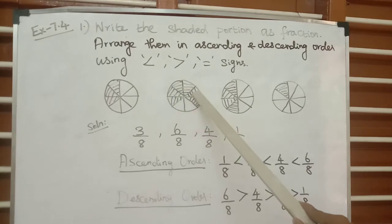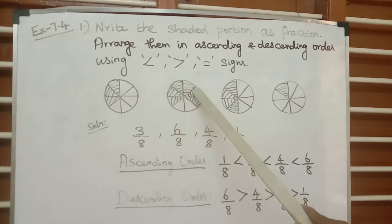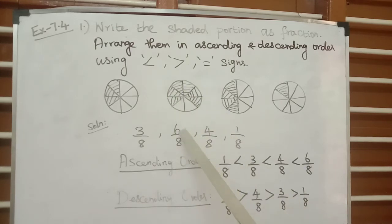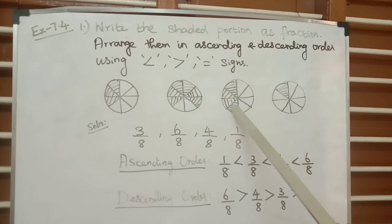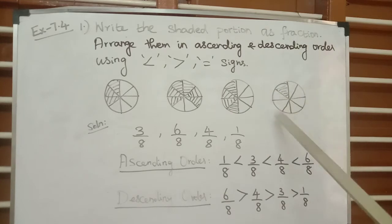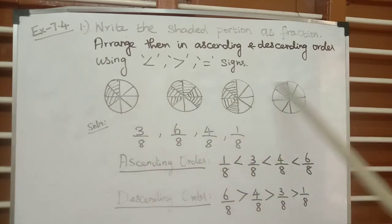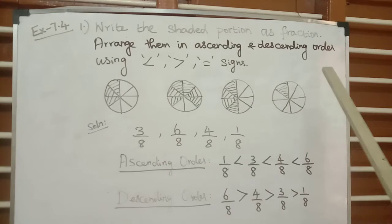For the second figure, count the total parts: 1, 2, 3, 4, 5, 6, 7, 8 — total 8 parts. The shaded parts are 1, 2, 3, 4, 5, 6 — so 6 out of 8 parts are shaded, giving the fraction 6 by 8. For the third figure: 8 parts total, with 4 parts shaded — that is 4 by 8. For the last figure: 8 parts total and only 1 part shaded, so the fraction is 1 by 8.